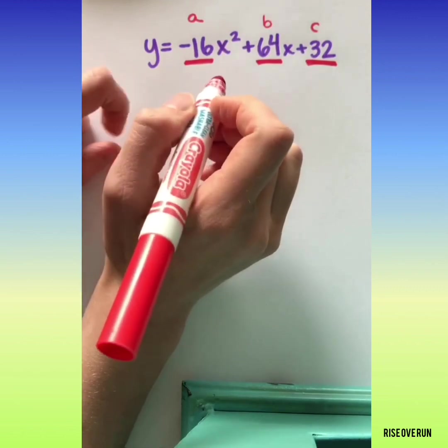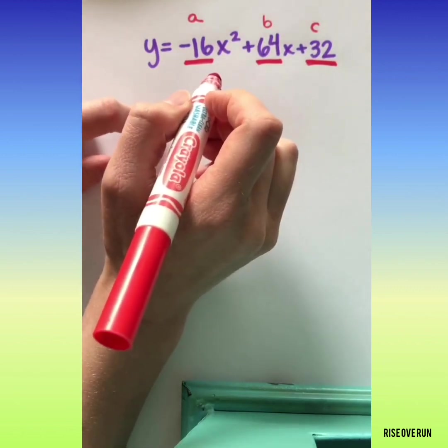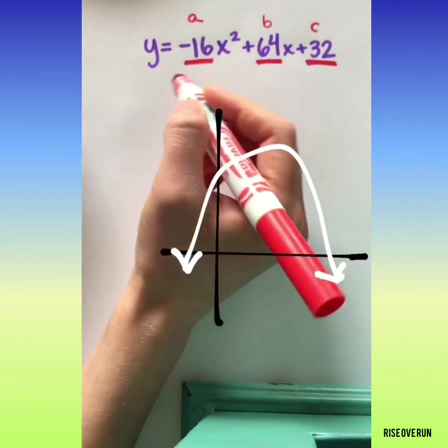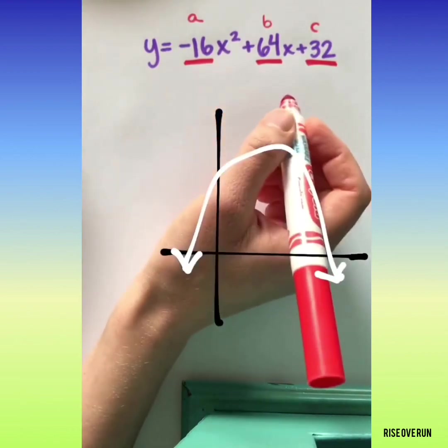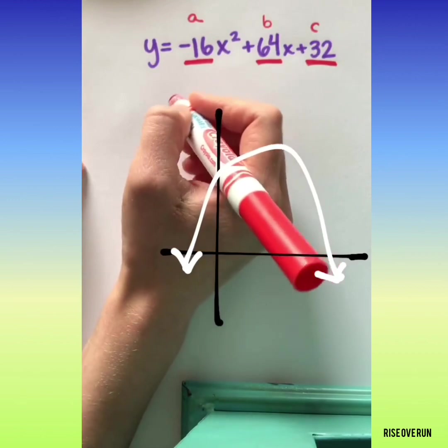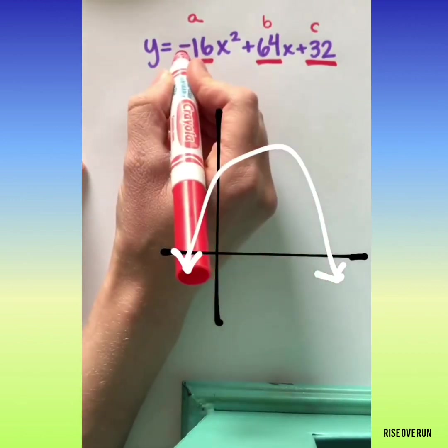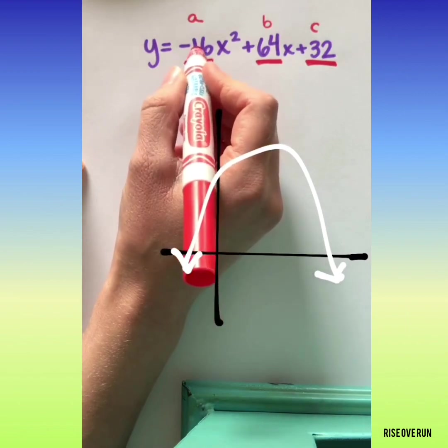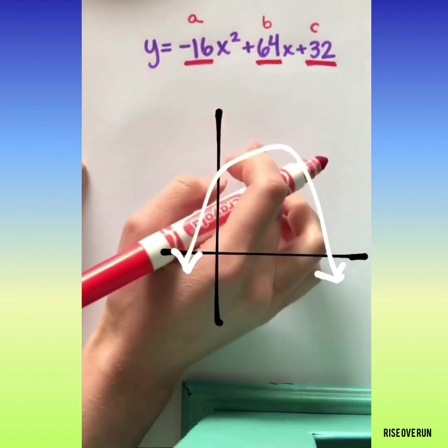Let's talk about some things you'll often see with quadratics. Since in real life these are often used to represent things being thrown or dropped, the parabola usually needs to open down. So in that case, this first coefficient a is typically negative. Remember that flips the parabola so it opens down.